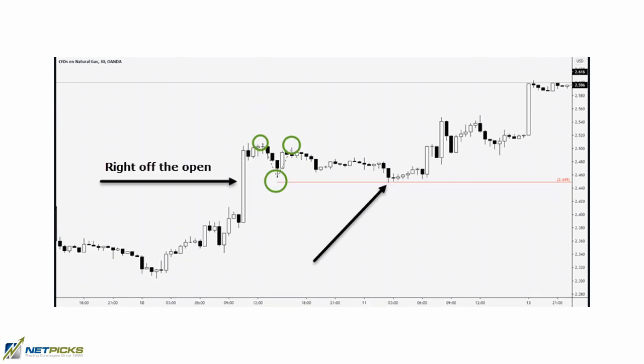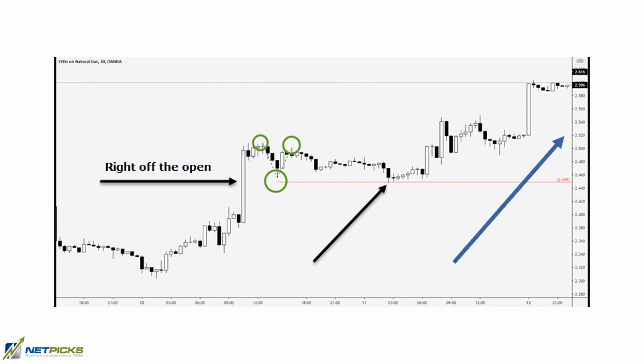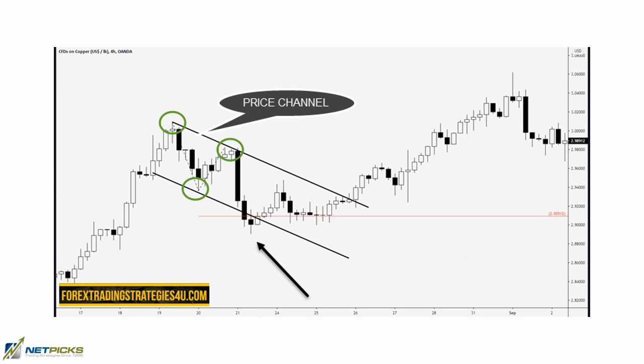Looking at natural gas — the CFD — price opened pretty strong, started to consolidate, then began making lower highs into support. We want to go long because of that strong momentum at the open, but we need a place to enter. Using the measured move gives us an indication of where this consolidation might end. Price drops right to 100% of the A-to-B distance and begins to bounce. You can also apply a price channel if you're looking for additional technical analysis confirmation.